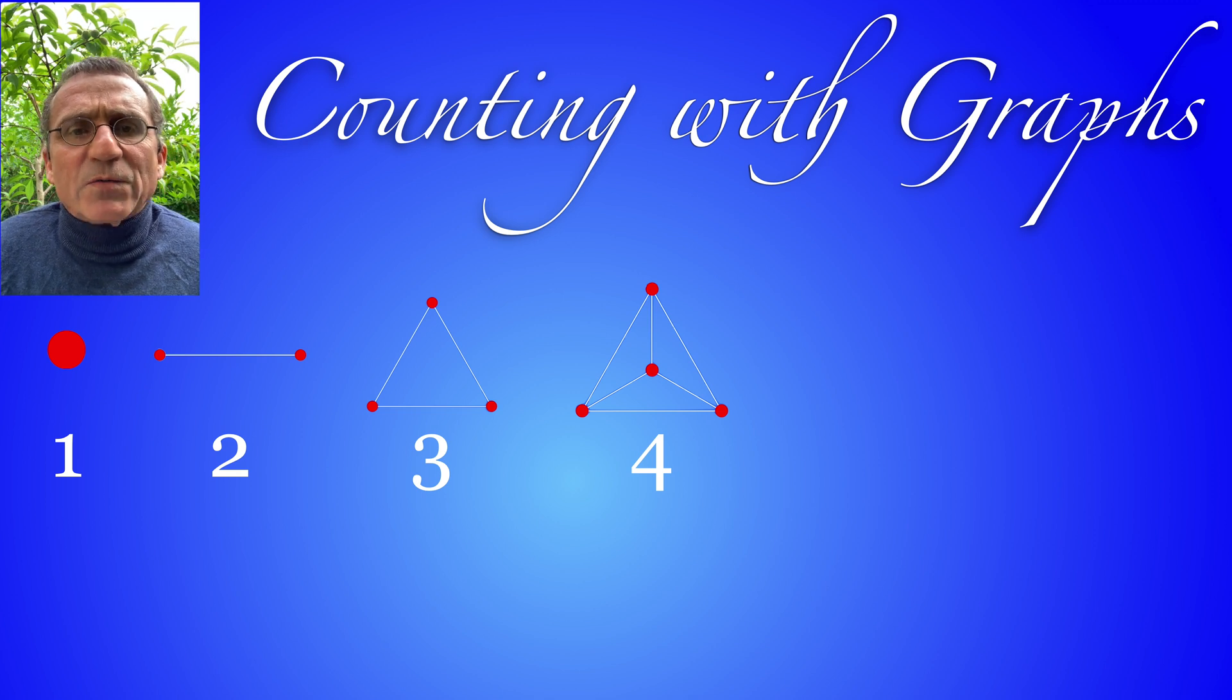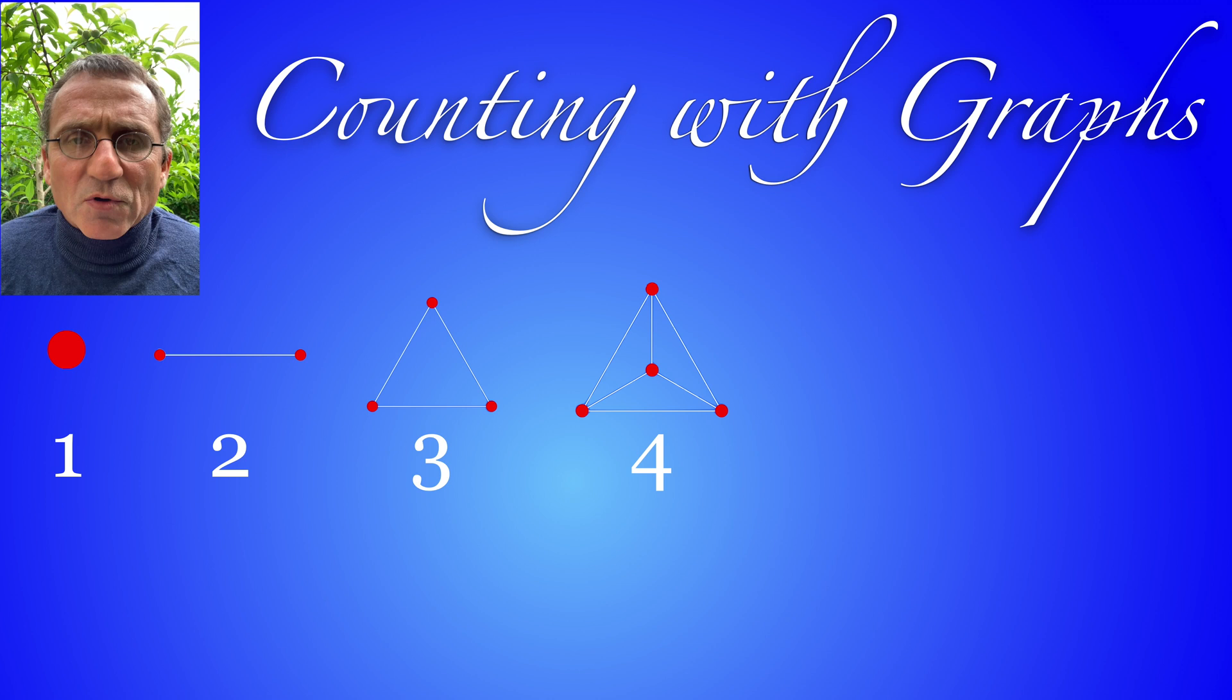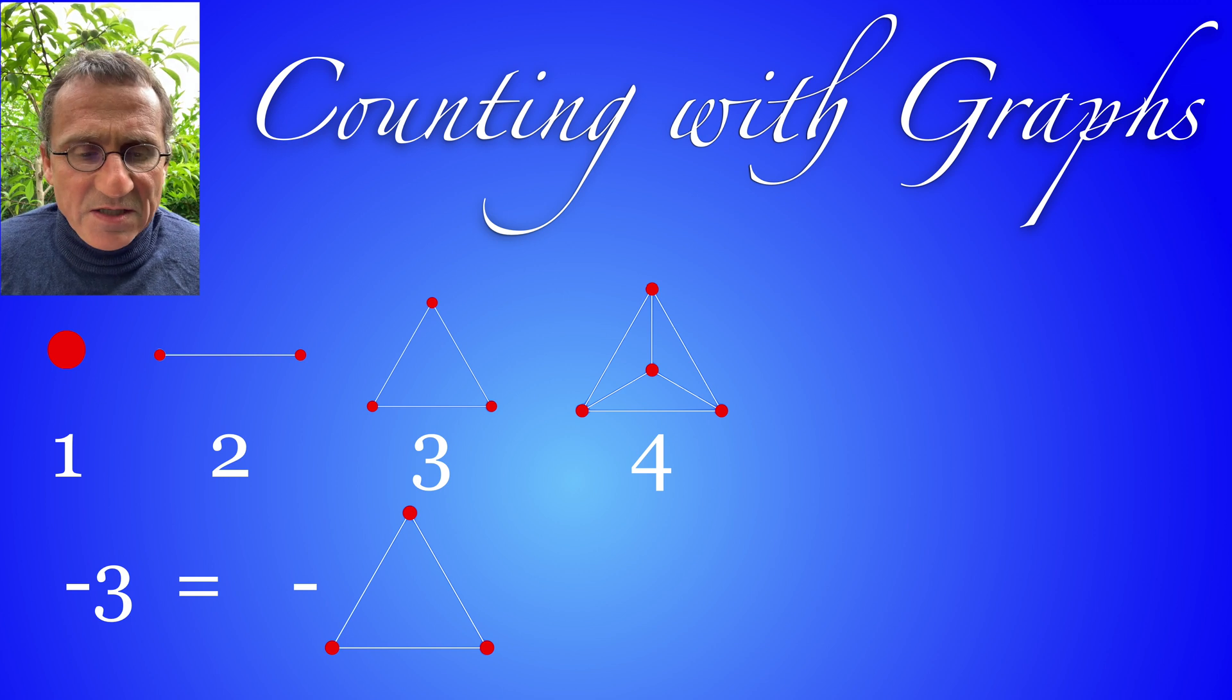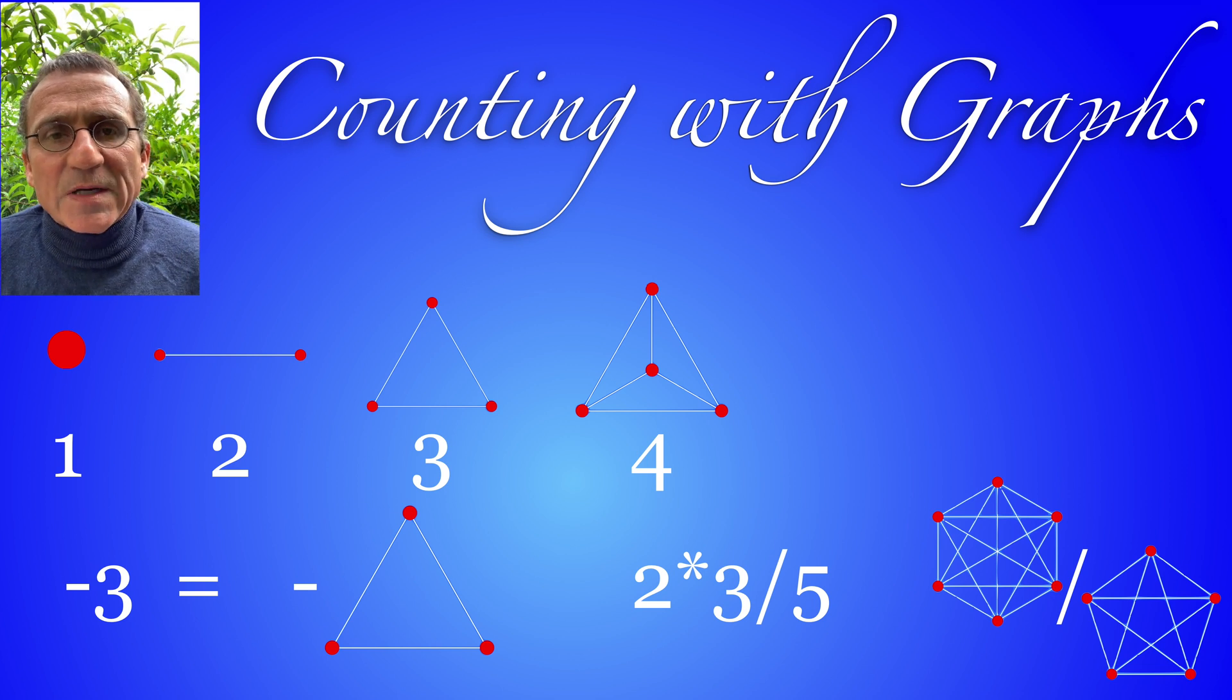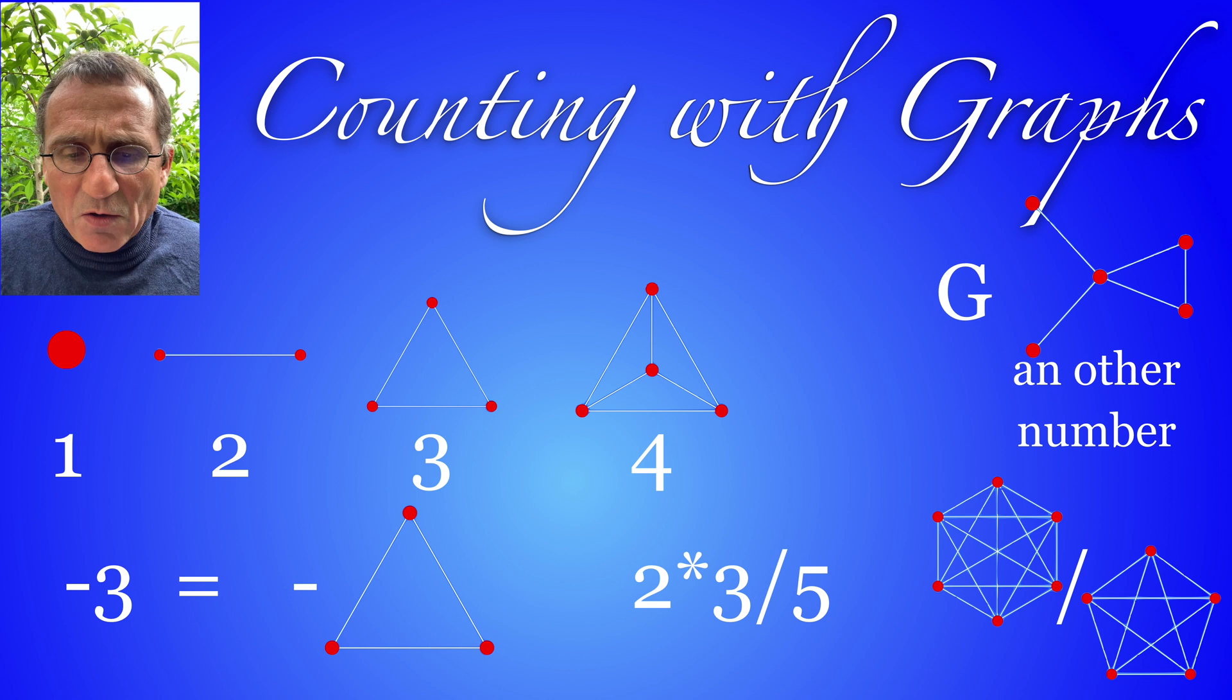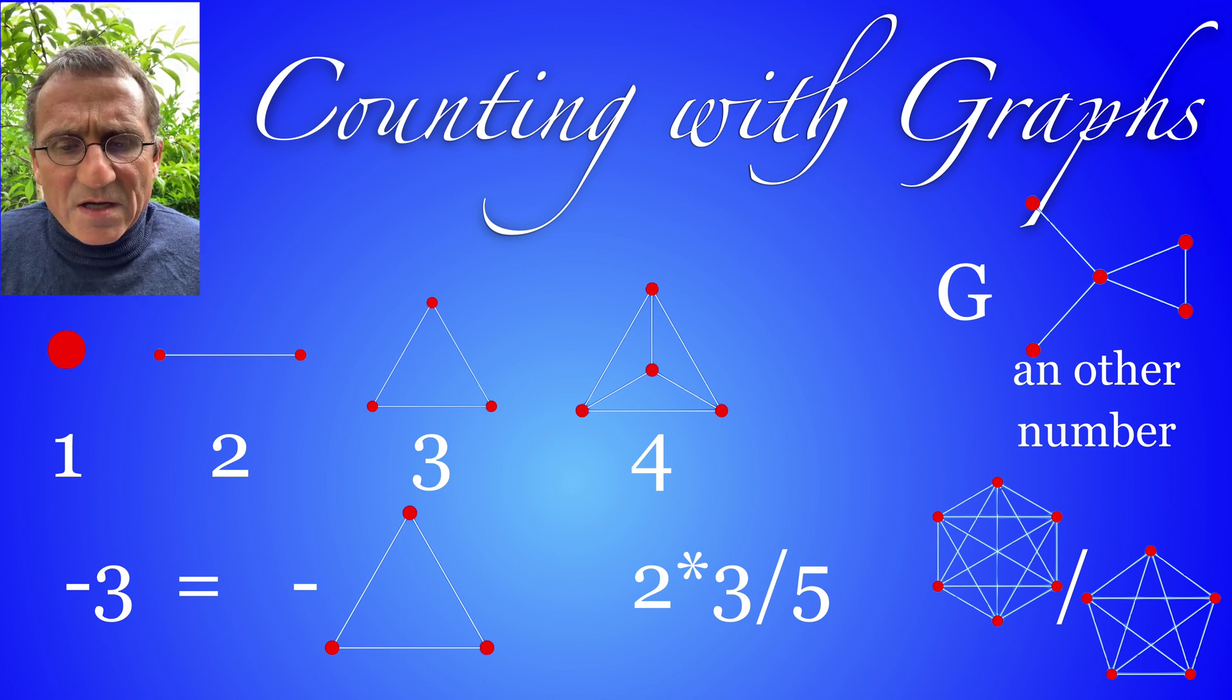So counting with graphs works with complete graphs so they play the role of the natural numbers and then we can take the negative graph. We just write negative of a complete graph as for example here negative three and then we can take fractions. But we can also use any other graph so it's a much more rich construct.